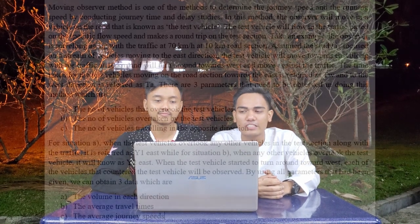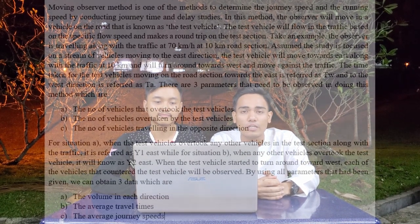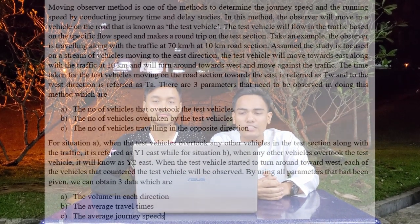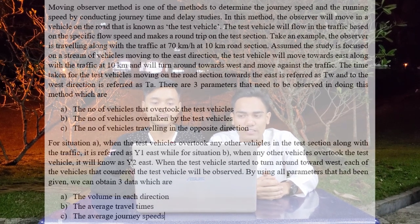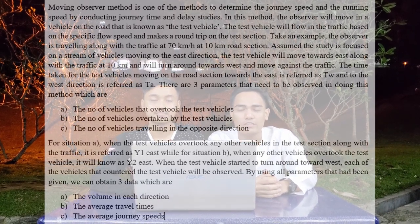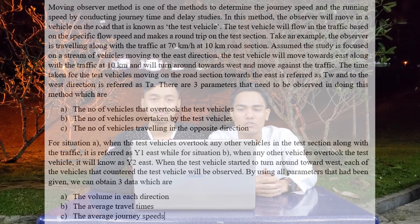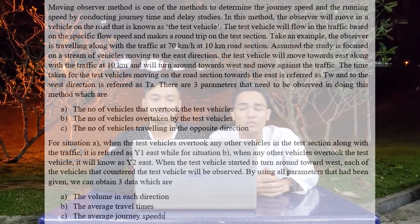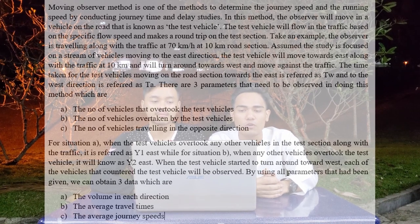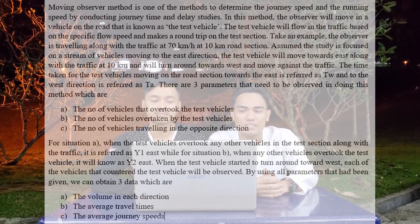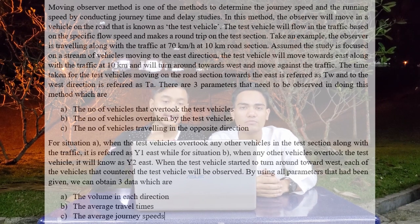This is one of the methods to determine the journey speed and the running speed, by conducting journey time and delay studies. In this method, the observer will move in a vehicle on the road — that is known as the test vehicle. The test vehicle will flow in the traffic based on a specific flow speed and make round trips on the test section.